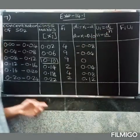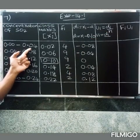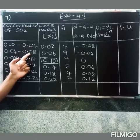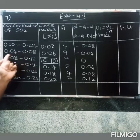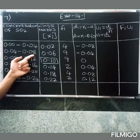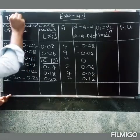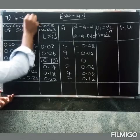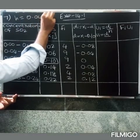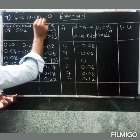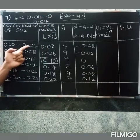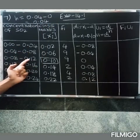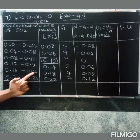Next, uᵢ = dᵢ divided by h. The h value is 0.04 (class width: 0.08 minus 0.04 = 0.04). So we divide each dᵢ by 0.04. For example: minus 0.08 divided by 0.04 gives minus 2. Minus 0.04 divided by 0.04 gives minus 1. Then 0, and 0.04 divided by 0.04 gives 1.